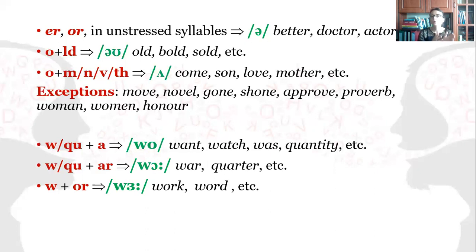W or QU plus AR is going to be pronounced as wor, as in war, water. W or QU plus OR is going to be pronounced as wer, work, word. So we have warm and worm. Now you do understand why it's like this.